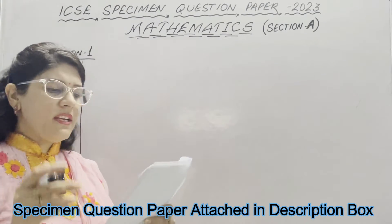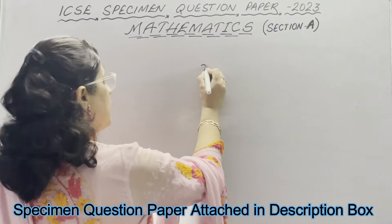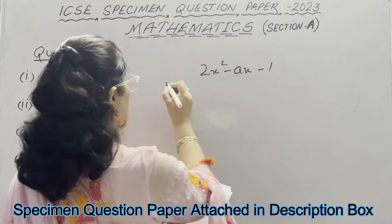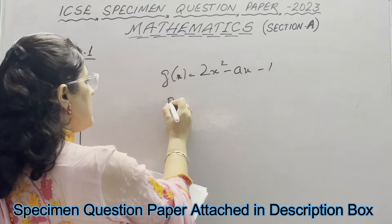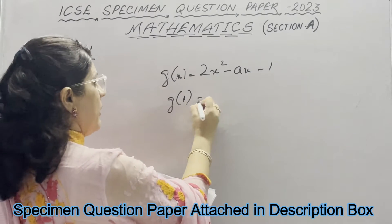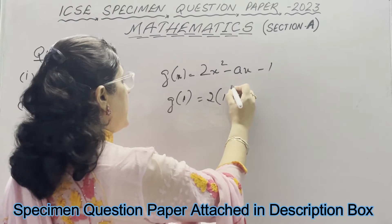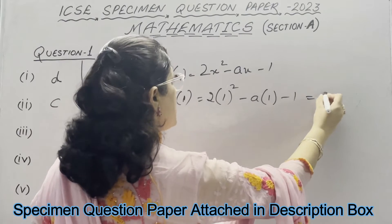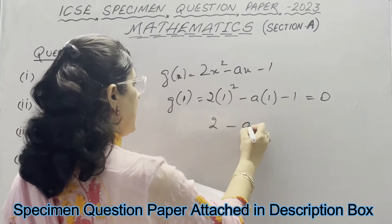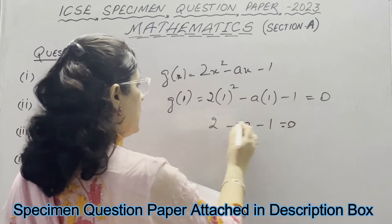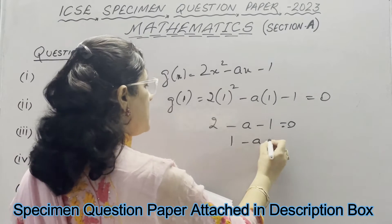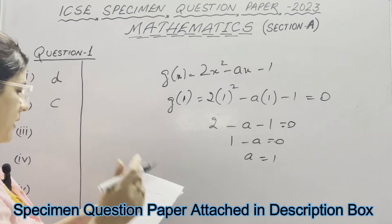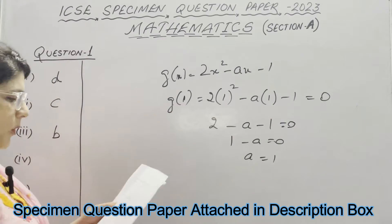Part 3: if x minus 1 is a factor of 2x squared minus Ax minus 1, call it G(x). Since x minus 1 is a factor, we substitute x equals 1. Because it is a factor, the remainder is 0. So 2 minus A minus 1 equals 0, meaning 2 minus 1 equals 1, so 1 minus A equals 0, giving A equals 1. The correct option is B.